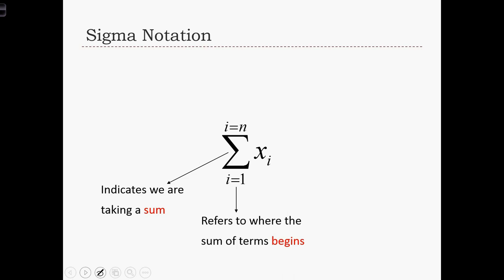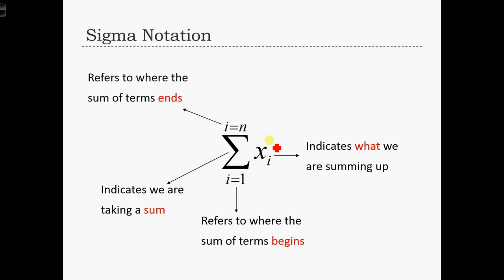The number below the sigma refers to where the sum of terms is going to begin, and the number above the sigma refers to where the sum of terms will end. Everything to the right of the sigma is indicating what it is we are going to sum up. What list of values will we be summing?